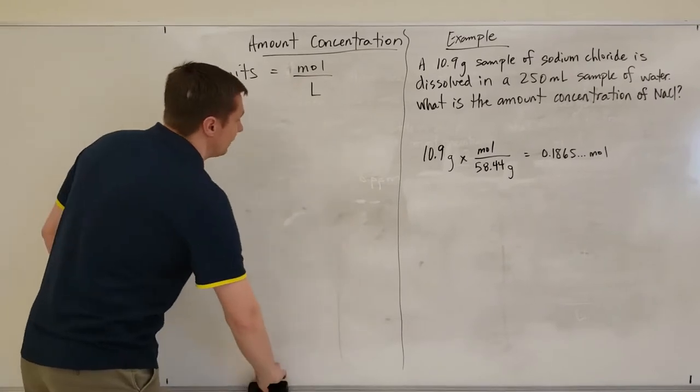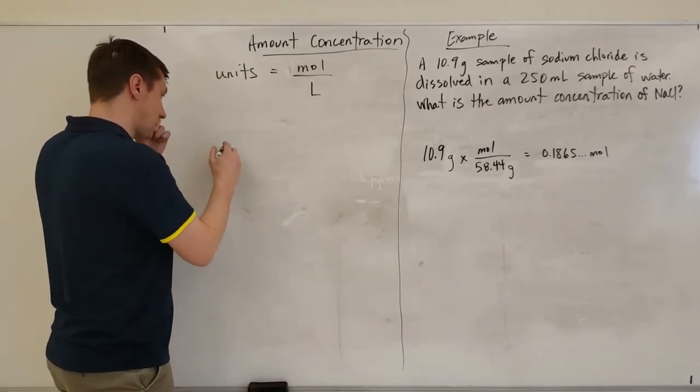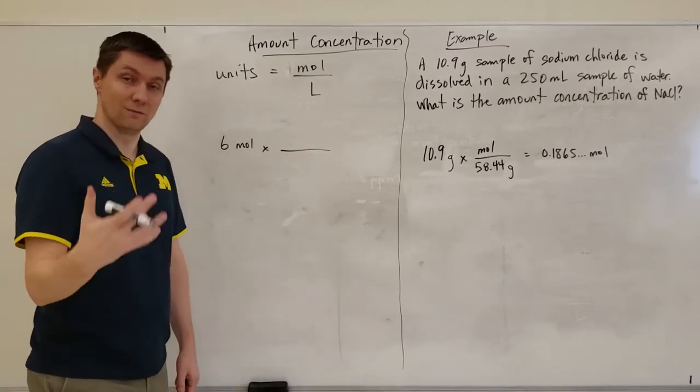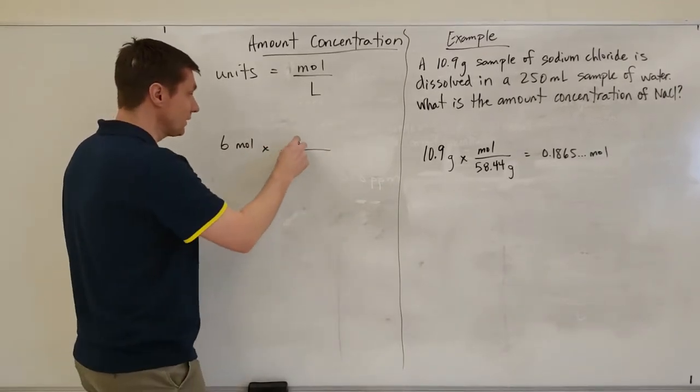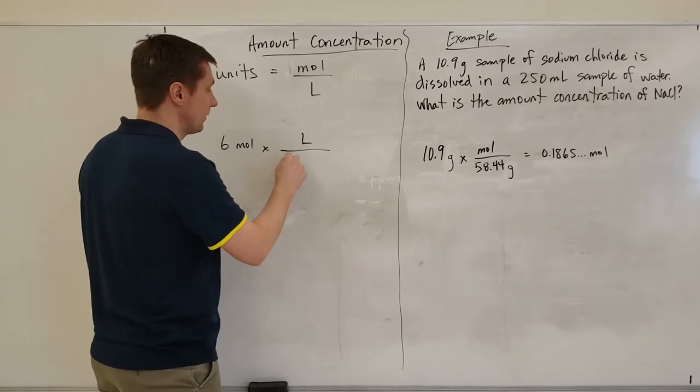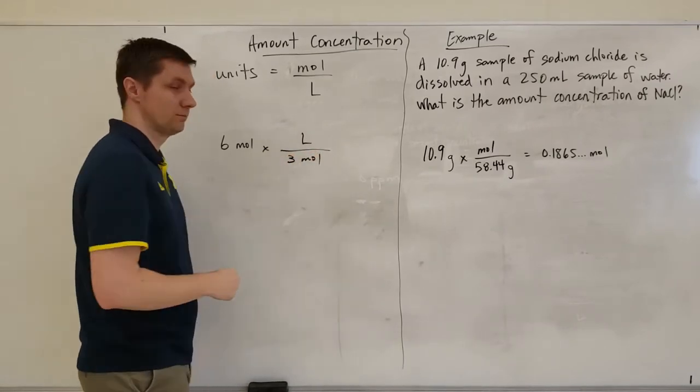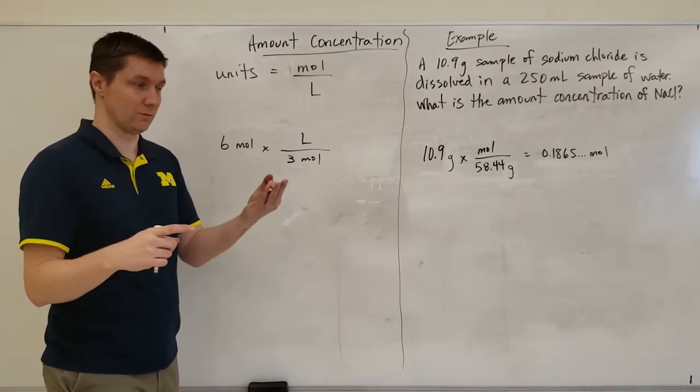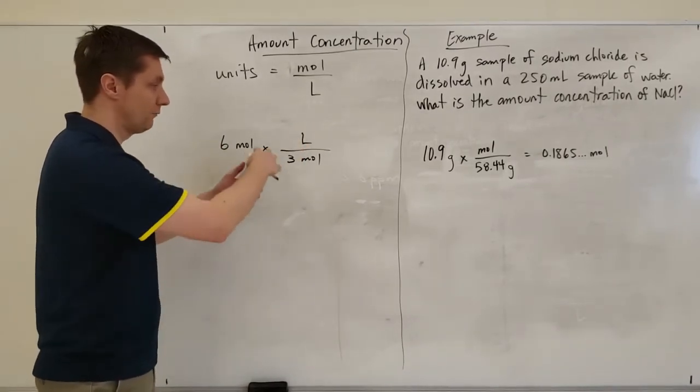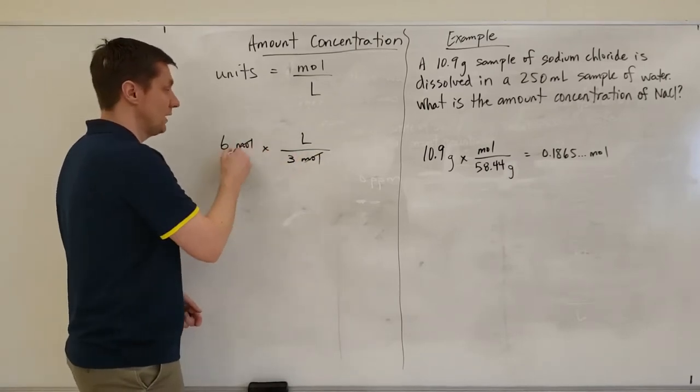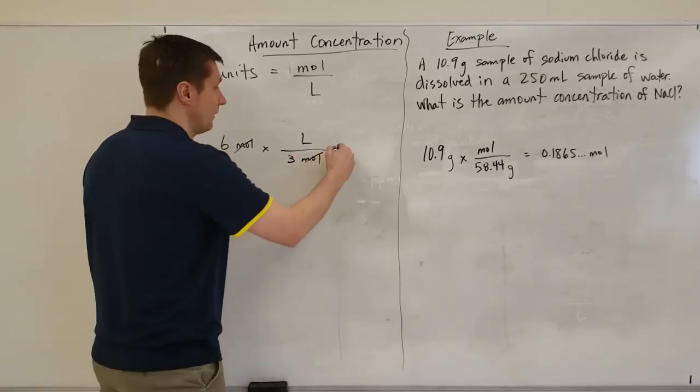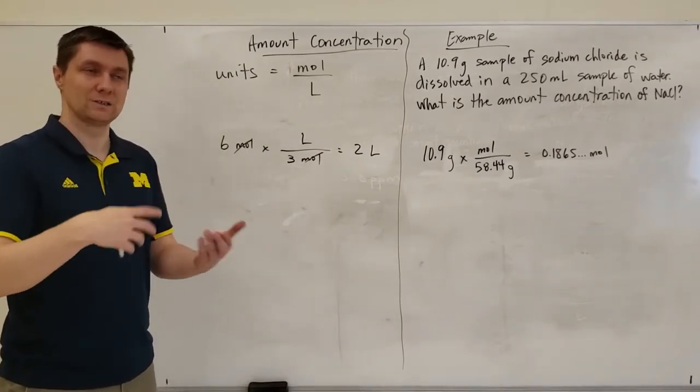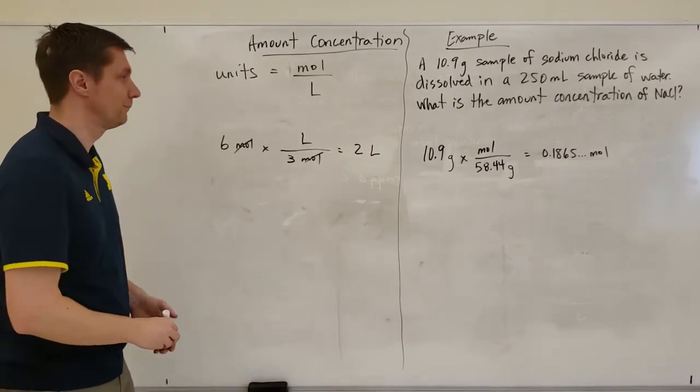Also you can do it where they give you the moles and you have to calculate the volume or the liters. Then you would go liters on the top and the moles on the bottom. Three moles per liter is the same as saying for every liter I have three moles, and I've written it this way so that the units can cancel. That gives me two liters using unit analysis.